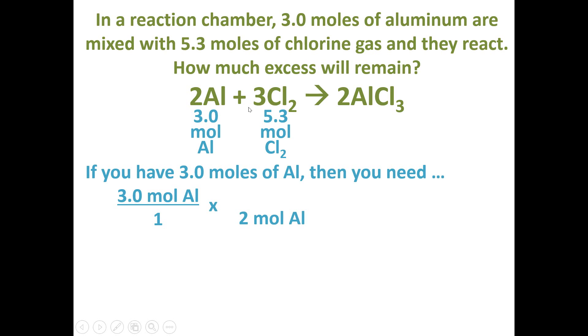For every 2 moles of aluminum, there are 3 moles of chlorine. The reason I wrote the aluminum on the bottom instead of the chlorine is because in a stoichiometry problem, I always need the units to cancel out diagonally. That's just the nature of dimensional analysis problems.